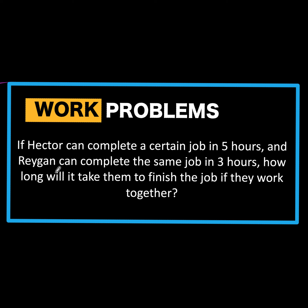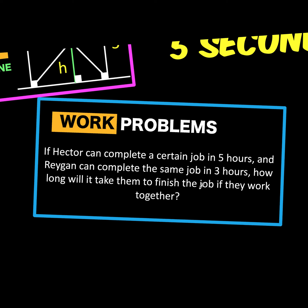In the second problem, this is a work problem where a certain job can be done by Hector in 5 hours, and Ray Gunn can do the same job in 3 hours working alone independently. If both of them decided to work together, how long will it take for both of them to finish the same job?